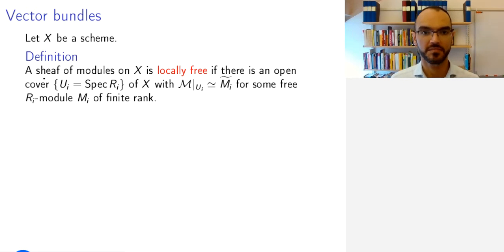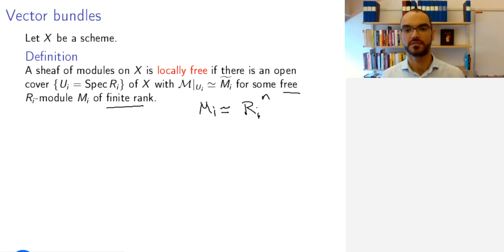If X is a scheme, then a sheaf of modules on X is called locally free if there is an open cover of affine subschemes, so that the restriction of M to U_i is given by the sheaf associated to a module M_i, where we require that this module M_i as an R_i module is free of finite rank. So this means that M_i is isomorphic as an R_i module to some finite number of copies of R_i.